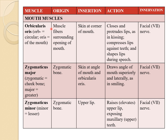Now coming to muscles of the mouth. The first one is the orbicularis oris. 'Oris' means of the mouth, and 'orbicularis' means circular. Its origin is the muscle fibers surrounding the opening of the mouth, and it inserts at the skin at the corner of the mouth. Its action is to close and protrude the lips, compress the lips against the teeth, and shape the lips during speech. It is innervated by the facial nerve.